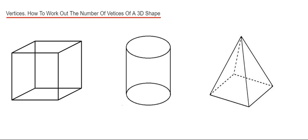Let's start off with our cube. We have one, two, three, four, five, six, seven, eight. So we've got eight vertices for our cube.